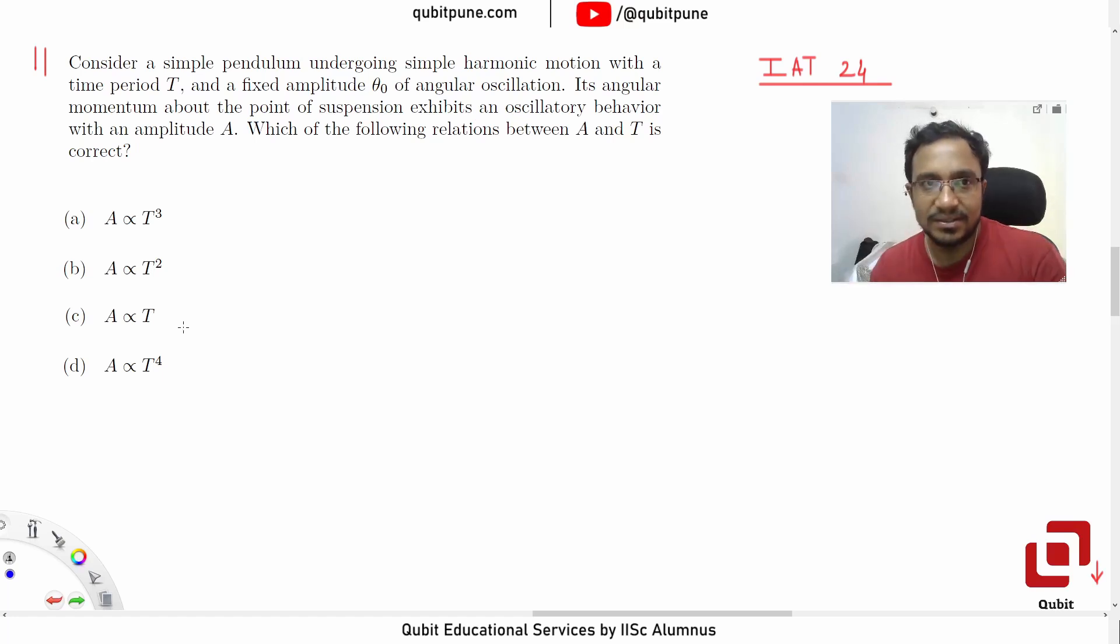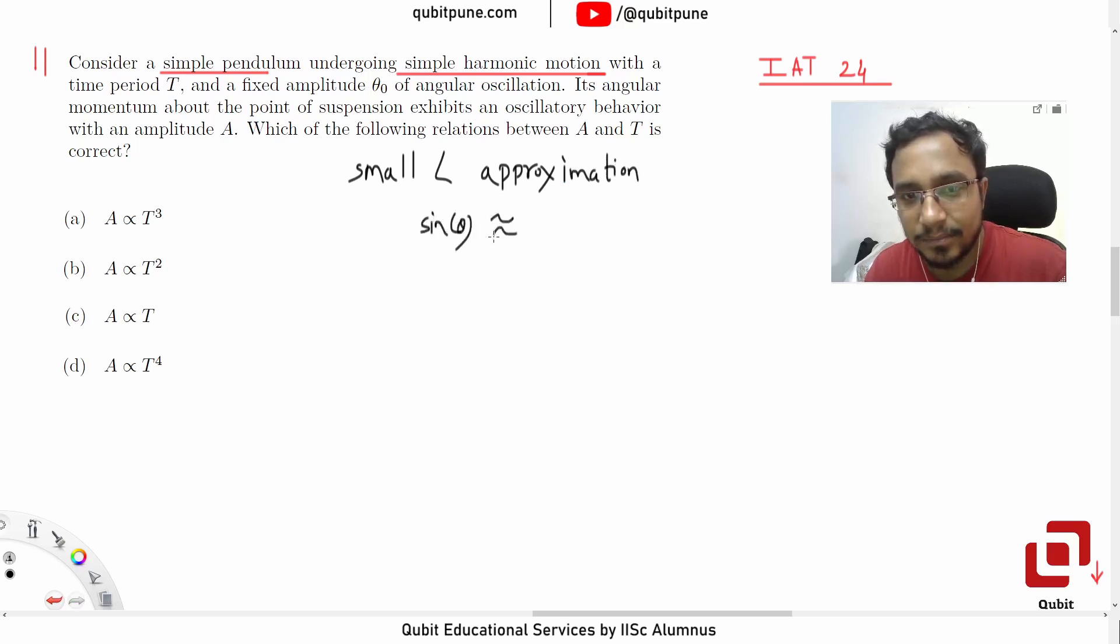Now understand, this simple pendulum is undergoing simple harmonic motion, which means this is still under the small angle approximation. If you look at the derivation that we write for the time period, not the formula, we use that it is approximately simple harmonic.